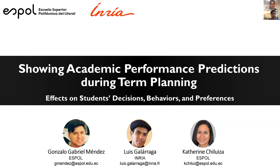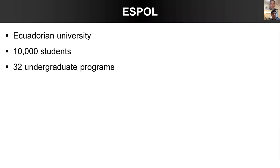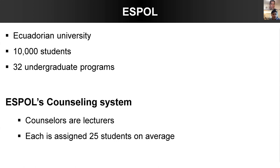This research takes place in the context of ESPOL, an Ecuadorian university with over 10,000 students and 32 undergraduate programs. ESPOL has a counseling system in which counselors are lecturers chosen by workload, and they are each assigned, on average, 25 students.